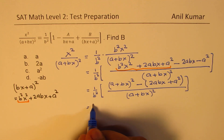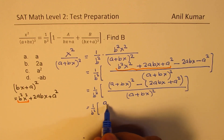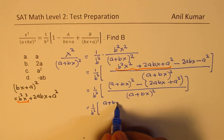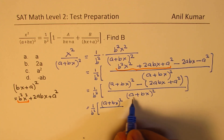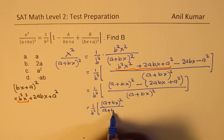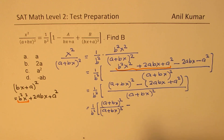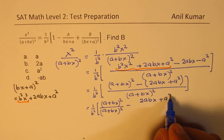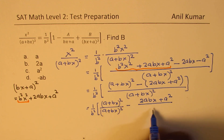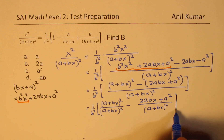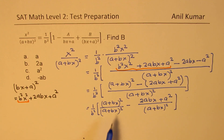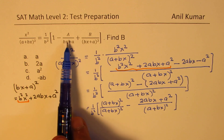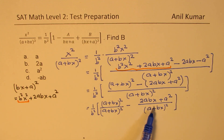So what we get is 1 over b squared times: (a plus bx) whole squared over (a plus bx) whole squared, which gives 1, minus (2abx plus a squared) divided by (a plus bx) whole squared. We have got 1 now, and we need to partial factor the other part.